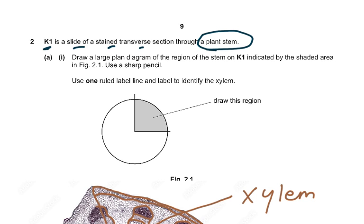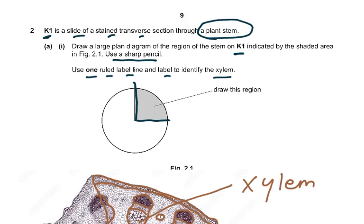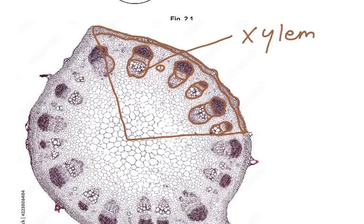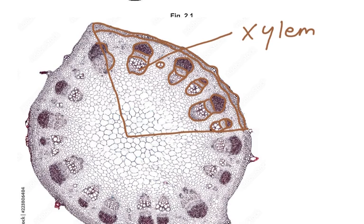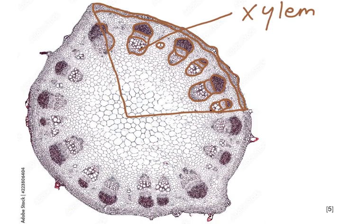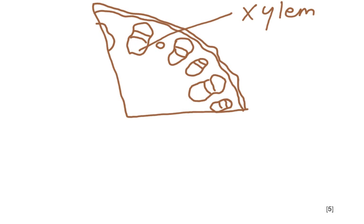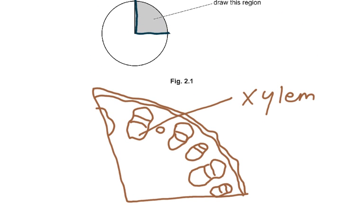Draw a large plan drawing of the region of the stem on K1. The stem is a rounded structure; the region is shown by the shaded area in figure 2.1. Use a sharp pencil, use one ruled label line, and label to identify the tissue. I've done the plan drawing — as I talked about in a previous video, you trace it. You can see here it is a quarter of the stem, this portion, and you have labelled the xylem, drawn it, and shown all the curves.